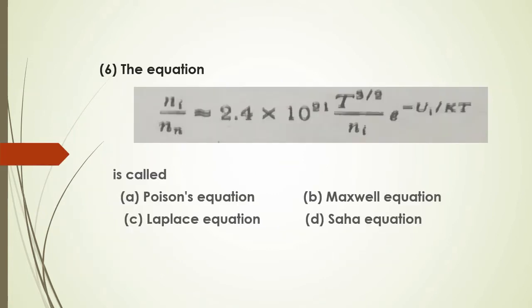The Saha equation gives the ratio n_i divided by n_n, equal to 2.4 times 10^21 times T^(3/2) over n_i, times e^(-U_i / kT). This equation is the Saha equation used to determine the degree of ionization.